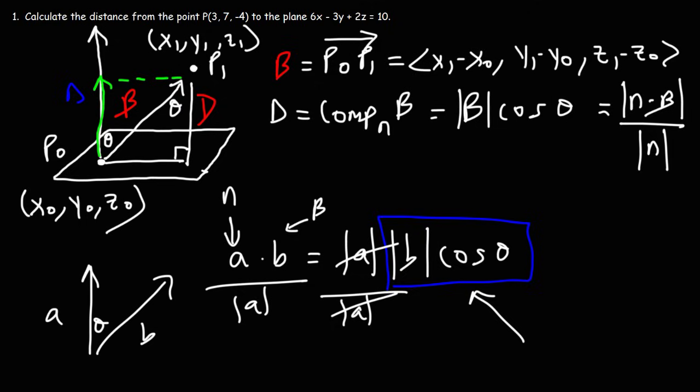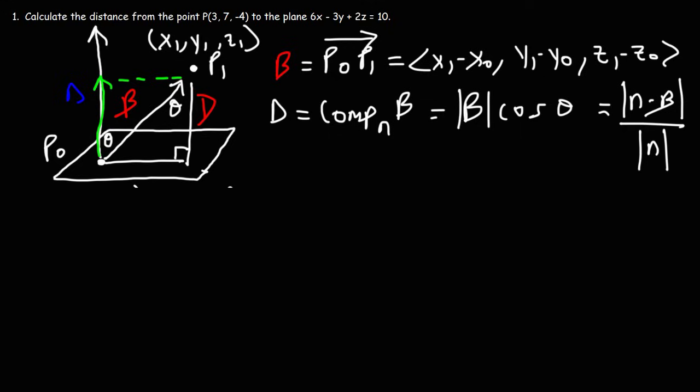So this is the formula that we're going to use to help us get the answer to the problem. So let's begin with the dot product of N and B. We have vector B, and vector N is simply ABC. So A is 6, B is negative 3, C is 2.